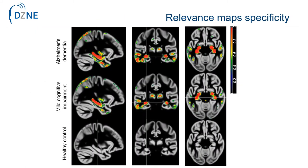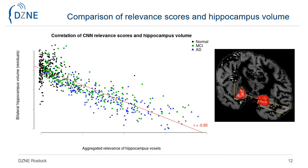As individual subjects' relevance maps are noisy and display relevance in heterogeneous regions, we assessed mean images derived for each diagnostic group separately. One can clearly see the highest contribution from the medial temporal lobe with hippocampus and parahippocampal gyrus, and from the lateral temporal gyrus. The neural network relevance scores within the hippocampus region of interest and actual hippocampus volume were highly consistent, with a Pearson correlation coefficient of minus 0.85 for the best model and a median value of minus 0.81 for the other models from the cross-validation procedure.